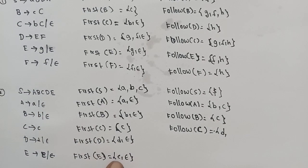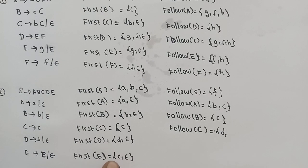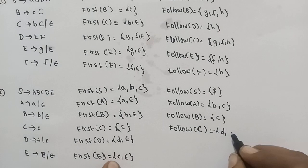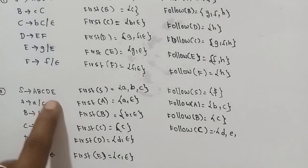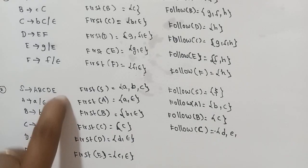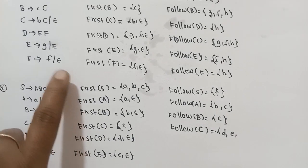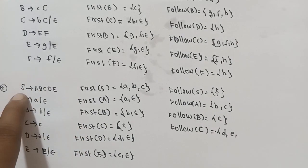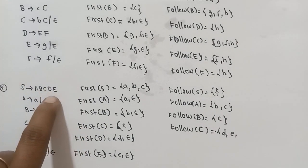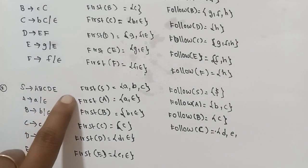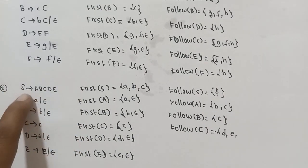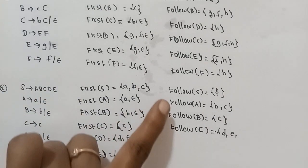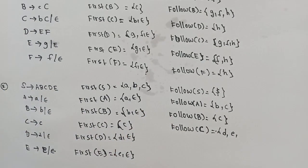FIRST of D contains epsilon here. Since epsilon is in FIRST of D, the remaining symbols are considered. Again, the LHS is the starting symbol, so we take union with FOLLOW of S. FOLLOW of S equals dollar.